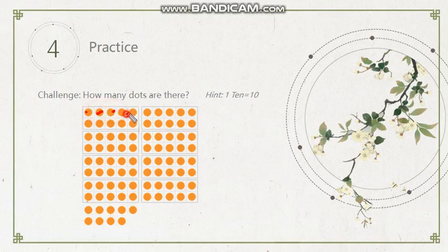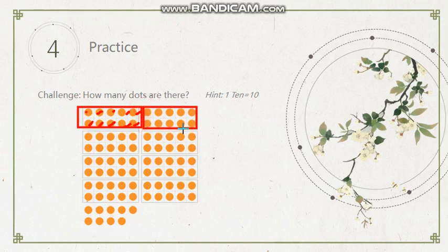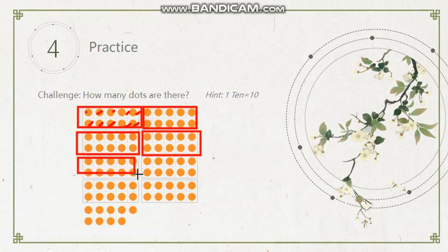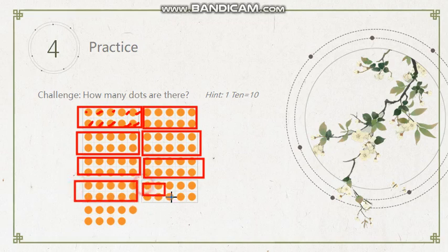One, two, three, four, five, six, seven, eight, nine, ten. We have ten orange dots in one frame. In one frame, we have ten. So how many frames do we have here? We have one ten, two tens, three tens, four tens, five tens, six tens, seven tens, eight tens. Great. We get it.